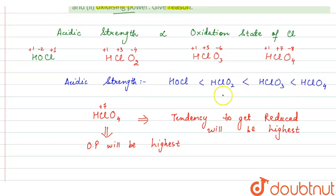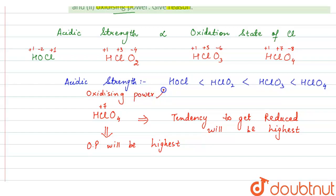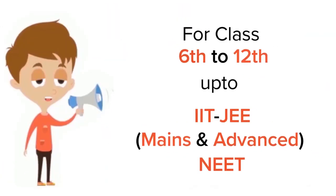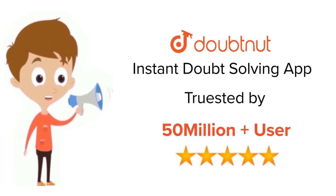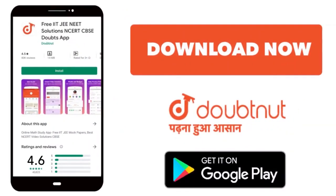The order of oxidizing power will be the same as acidic strength. This is the answer. Thank you. For Class 6–12, JEE and NEET level — trusted by more than 5 crore students. Download DoubtNut today.